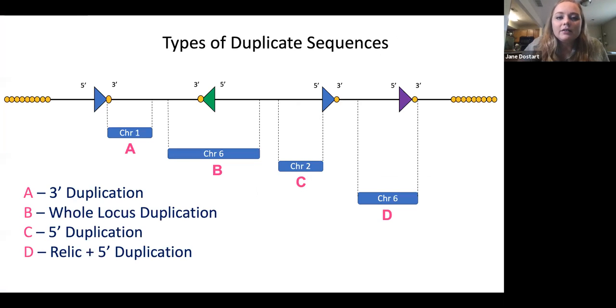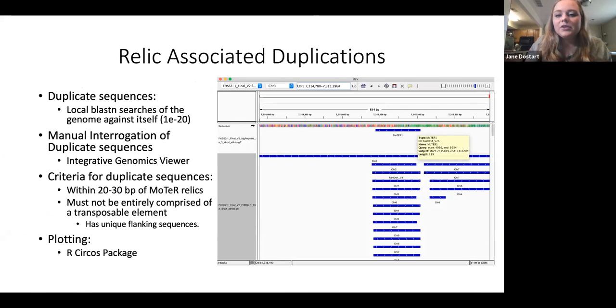For the other parts of this objective, we know that previously a lot of these relics are associated with duplicate sequences found flanking them. We have various kinds. A shows a three prime end duplication. B, a whole locus duplication where the relic and both of its flanking sequences are duplicated. C is a five prime flanking sequence duplication. And D is a relic and five prime flanking sequence duplication. And these are thought to maybe highlight how the relics were actually formed through various breakage repair mechanisms in the chromosome. So I wanted to look at my different strains and survey the duplications found around them to sort of clear that up a bit.